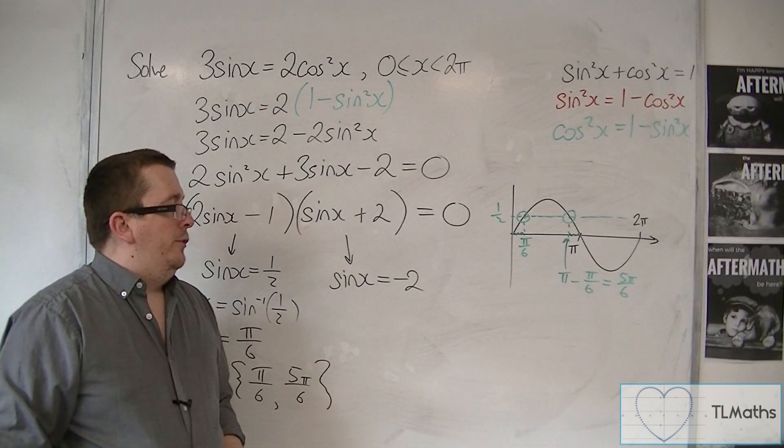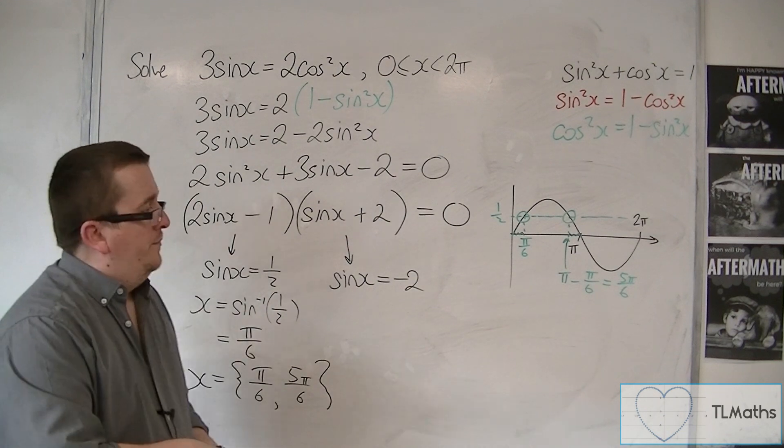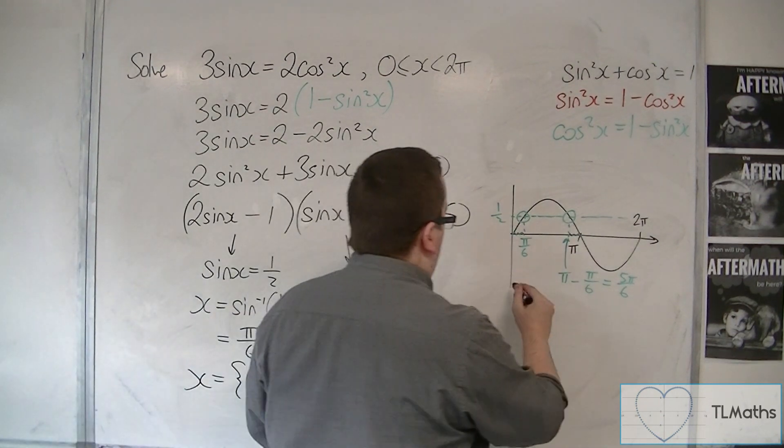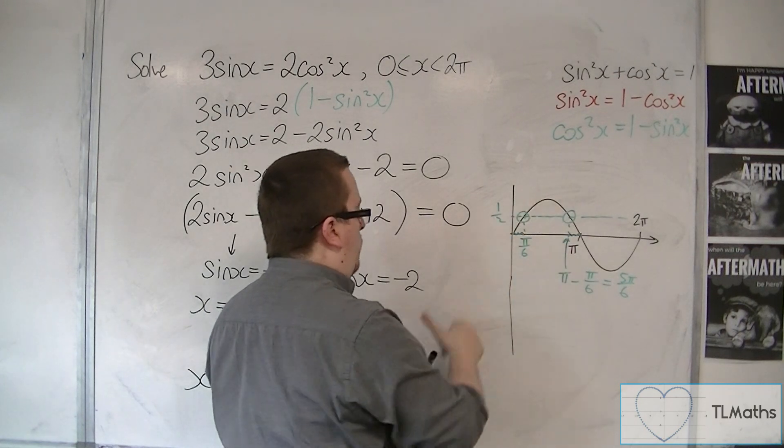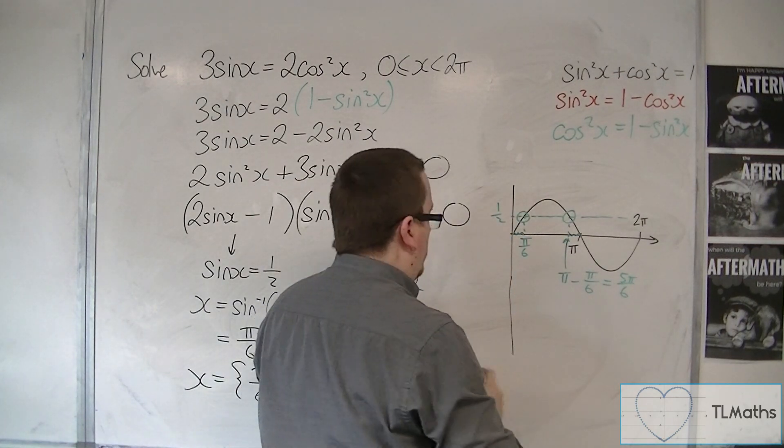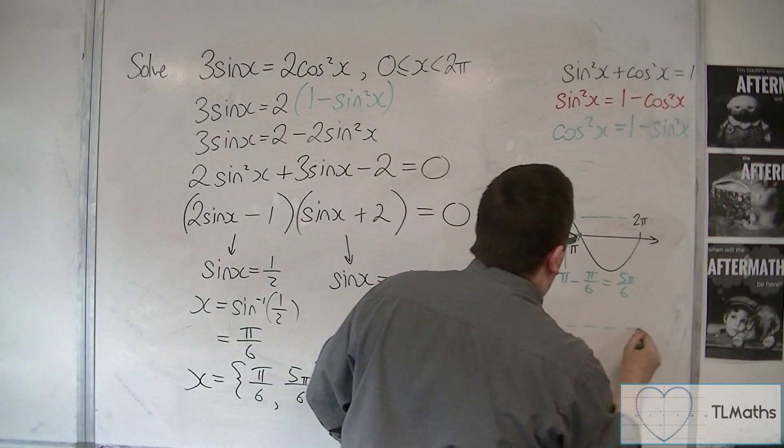Now I'm going to try and solve sine x is equal to minus 2. Now, minus 2, because the curve goes between minus 1 and 1, minus 2 would be all the way down here.